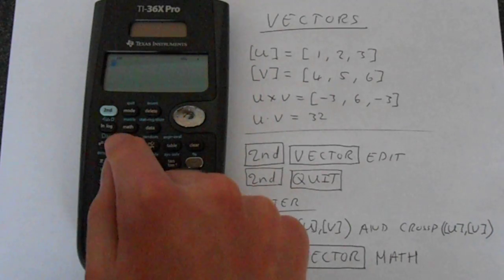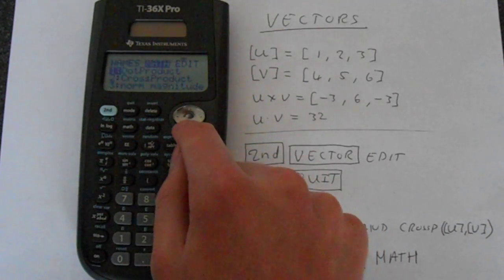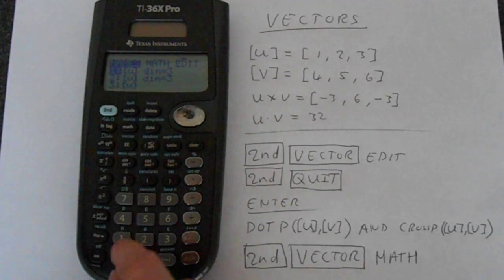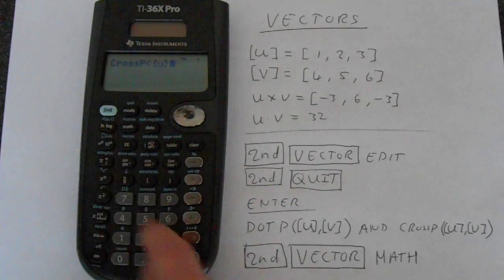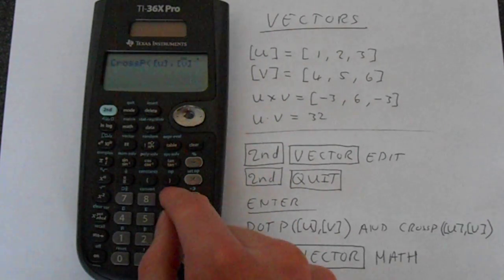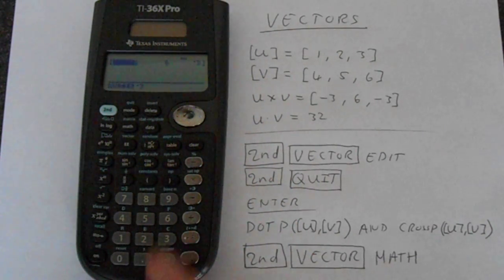Exactly the same thing for cross product. Go into vector, then go to math, cross product, and then you can access u and v under names. Then we want a comma, and then we want v, which is under 2. Close the brackets, cross product, and it calculates it there.